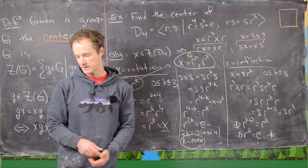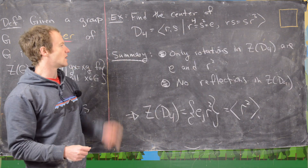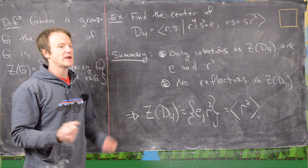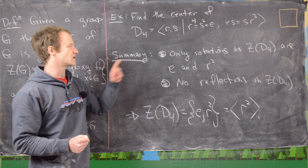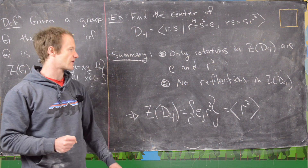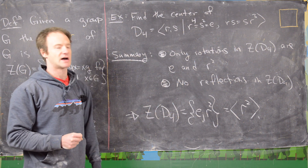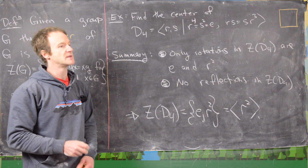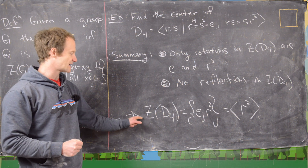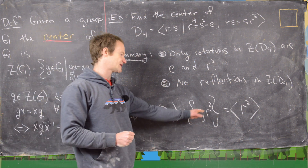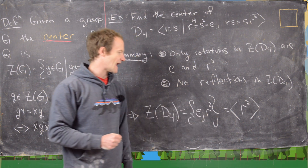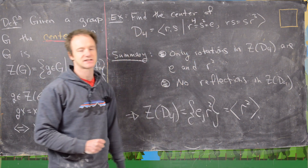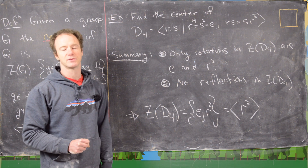In summary: the only rotations in the center of D4 are E and R squared. R to the first and R cubed cannot be in the center, and there are no reflections in the center — we showed that by arriving at a contradiction. Therefore the center of D4 is precisely the subgroup containing the identity and R squared, which is a rotation by 180 degrees. That's exactly the cyclic subgroup generated by R squared.